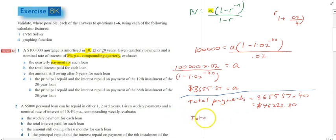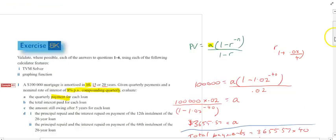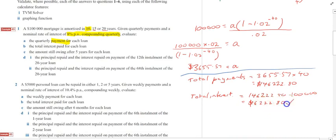Now, total interest paid. Really got to think about what's going on here. You bought a house and you borrowed $100,000. Your total repayments have been $146,222. So the total interest paid over the life of the loan is $146,222.80 minus $100,000. I don't need a calculator to do that. $46,222.80. And done.